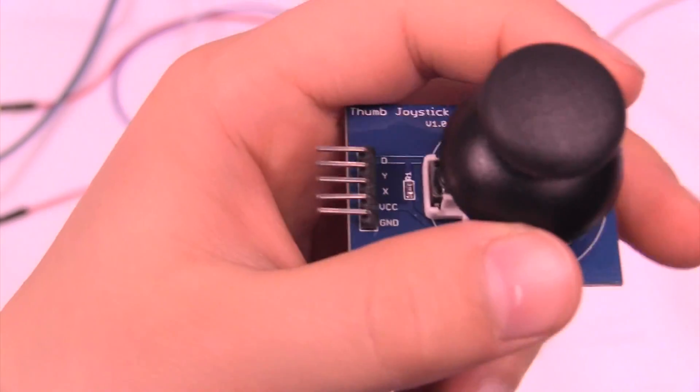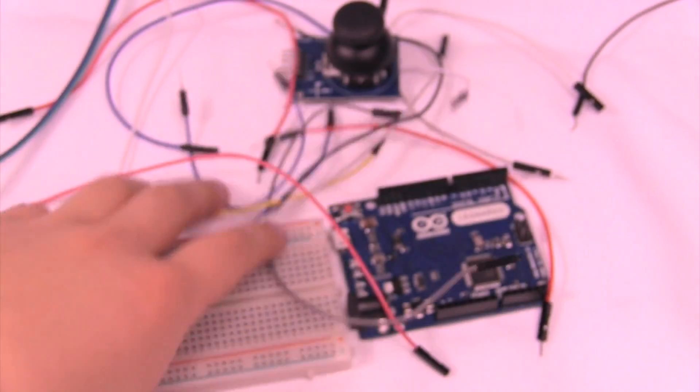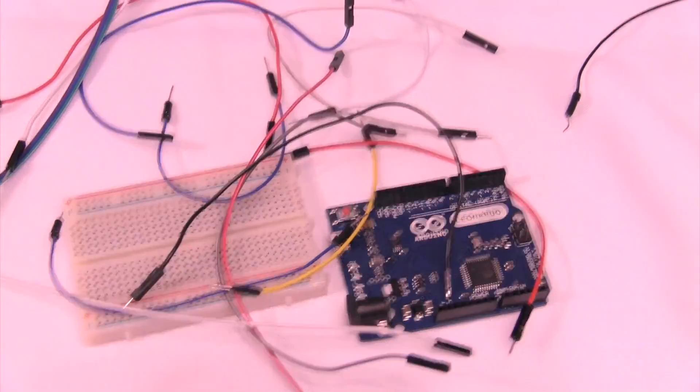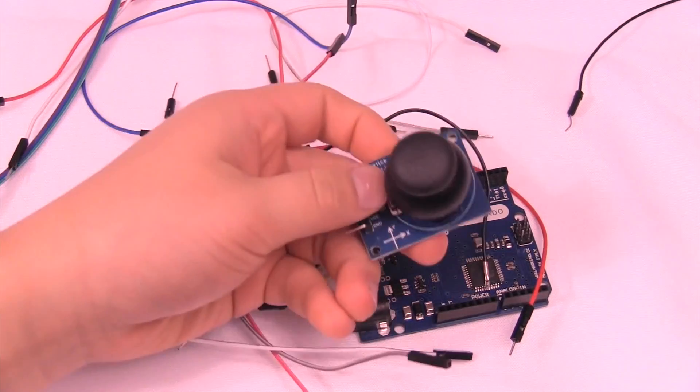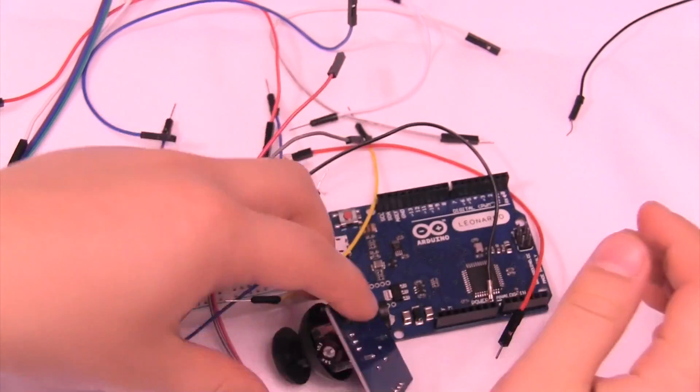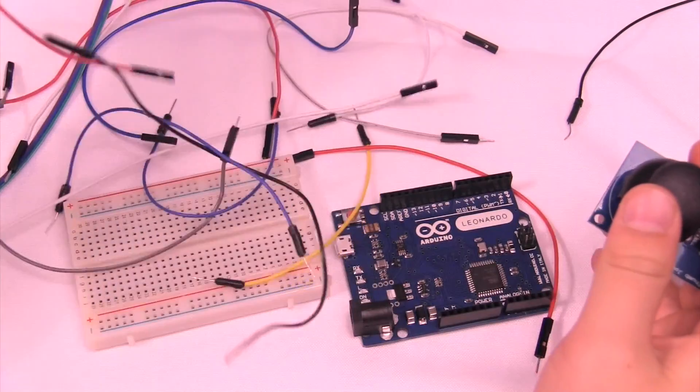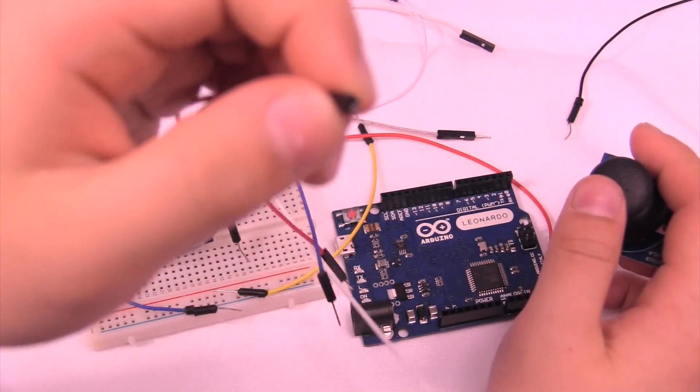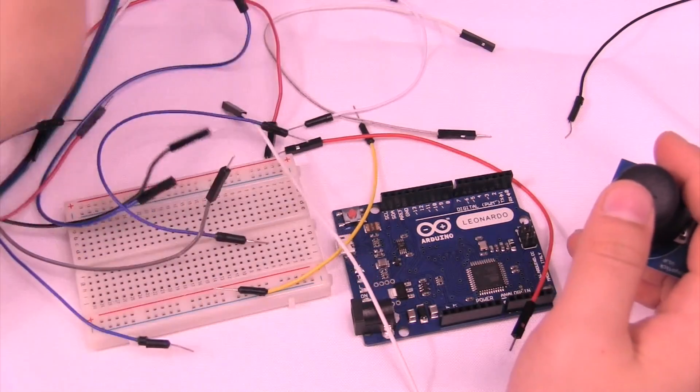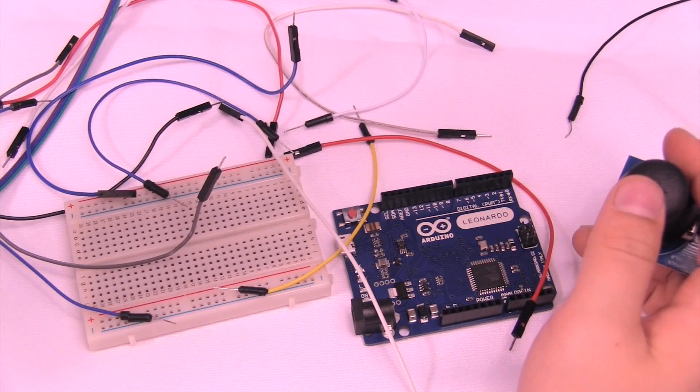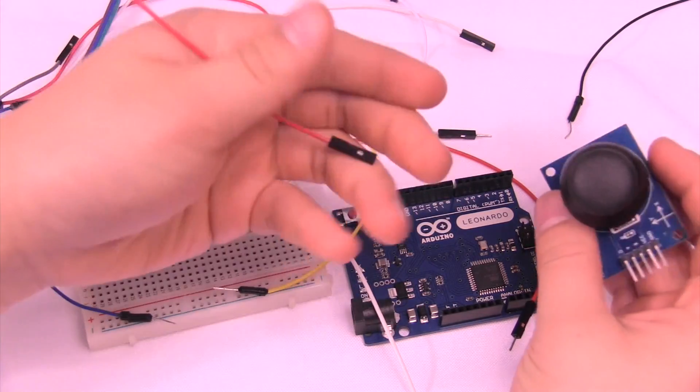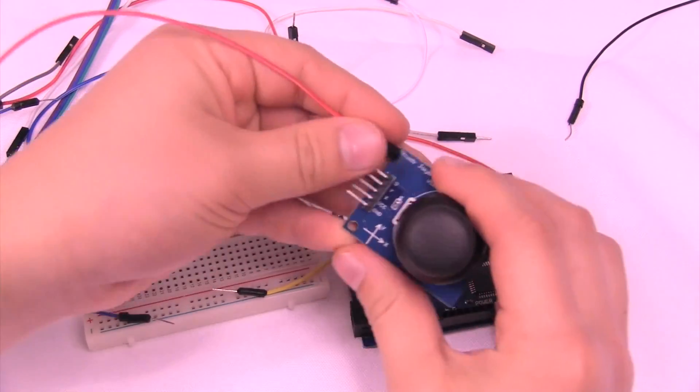We're going to start by taking the joystick and connecting up VCC and ground, which I will do right now. Make sure you have a male to female header wire like this one. So we're gonna plug in the VCC and plug that into the positive terminal.